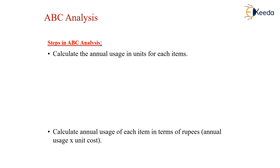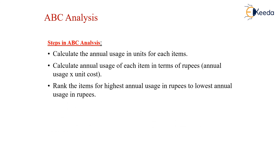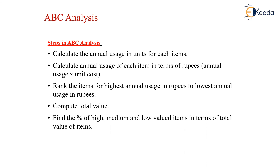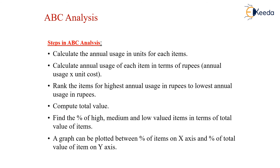The steps in ABC analysis are: first, calculate the annual usage in units for each item; then calculate the annual usage in rupees, which is annual usage multiplied by unit cost; then rank the items from highest annual usage in rupees to lowest. Next, compute the total value and find the percentage of high, medium, and low valued items in terms of total value.